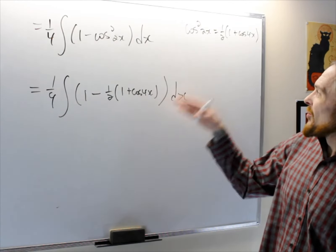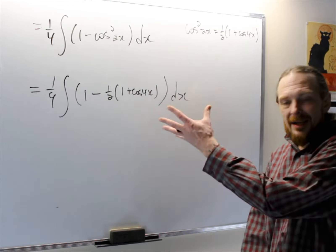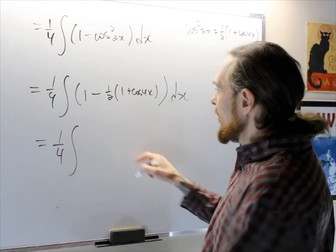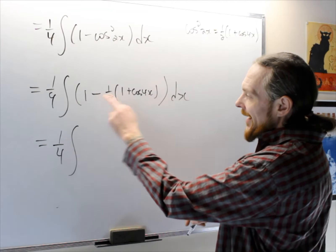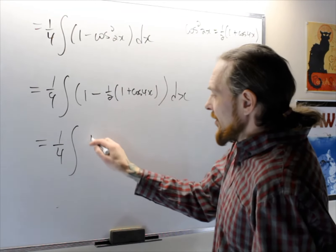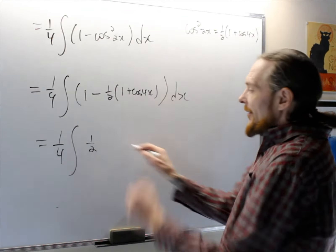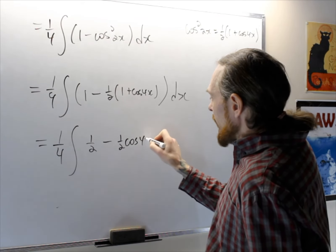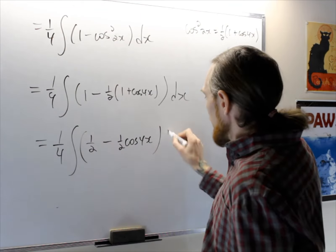So then what I'm going to do is, once I use the formula, you want to clean things up and group like terms. So what I see is, I have 1 quarter, the integral of, I'm going to distribute the negative, so I have 1 minus 1 half, which is 1 half, and then I have minus 1 half cos 4x dx.